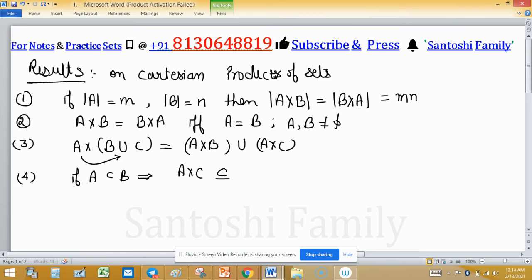Result 5: A cross (B intersection C). This will equal to, again, distributive property will follow: A cross B intersection A cross C. Now these two properties put at the same place.